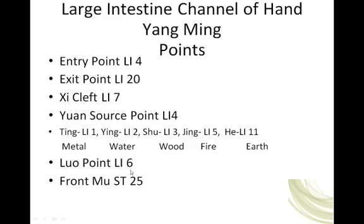The Luo point is Pian-li, Large Intestine 6. The front-mu point is Stomach 25, which lies right in the area of the large intestine. We know front-mu points are used diagnostically — if they're tender, they could point to an issue with the related Zang or Fu. On the Yang channels, following the technique of using Yin to nourish Yang, the front-mu points are very effective at tonifying the Fu. So Stomach 25 is a great point for harmonizing and strengthening the qi of the intestines.